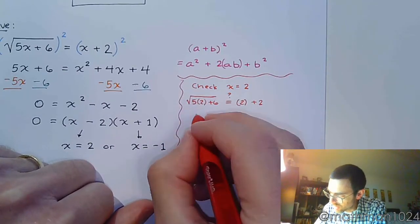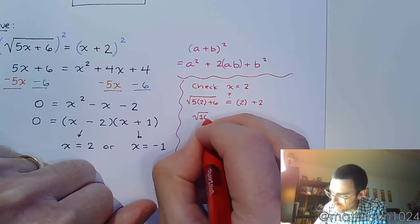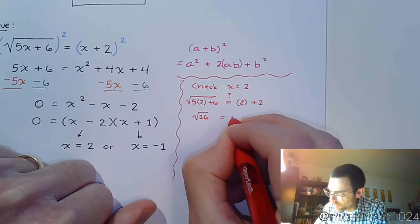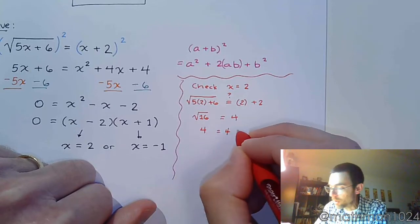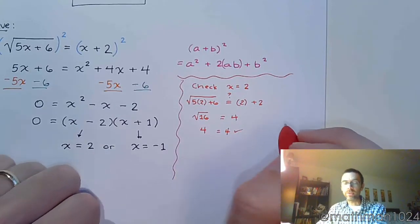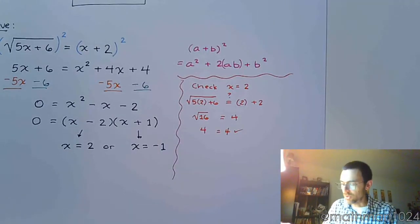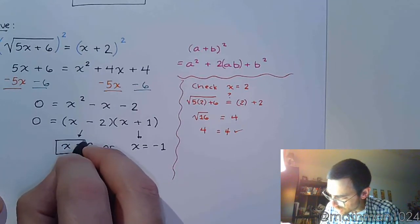Let's see. That's 10 plus 6. That gives me the square root of 16. And that's just 4. We can see that 4 does equal 4. That's a true statement. So I've plugged in x equals 2. And I can confirm that it works.